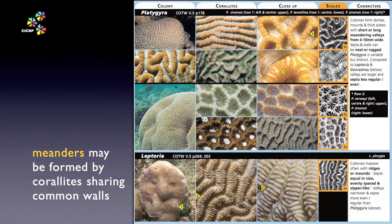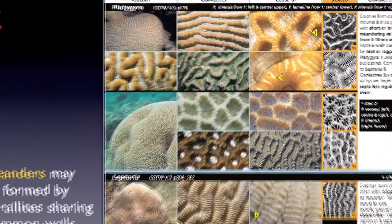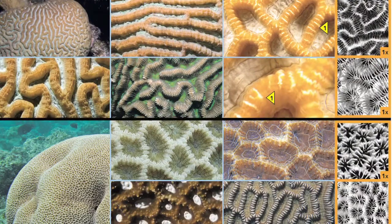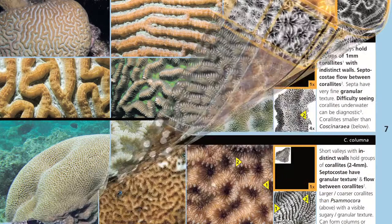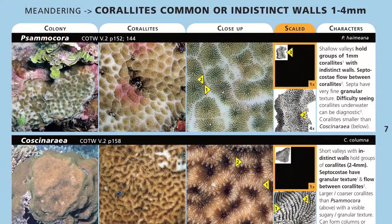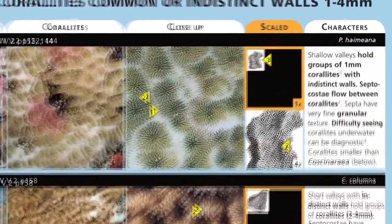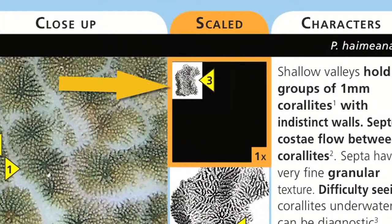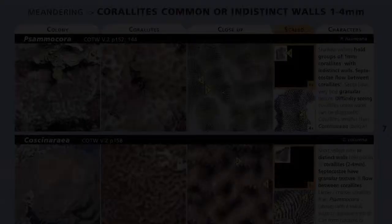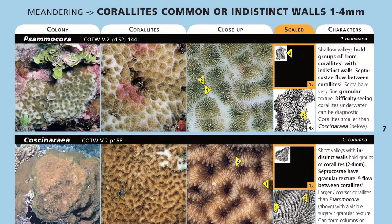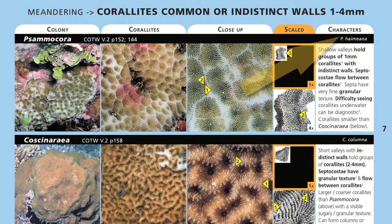Let's see some examples. Valleys formed by common walls can be long or short, narrow or wide. Keep your thinking in the real world by always checking the true scale box. Note also that colour is rarely useful in coral identification. Keep your focus on the wall structure, scale, and the character description on the right hand side.